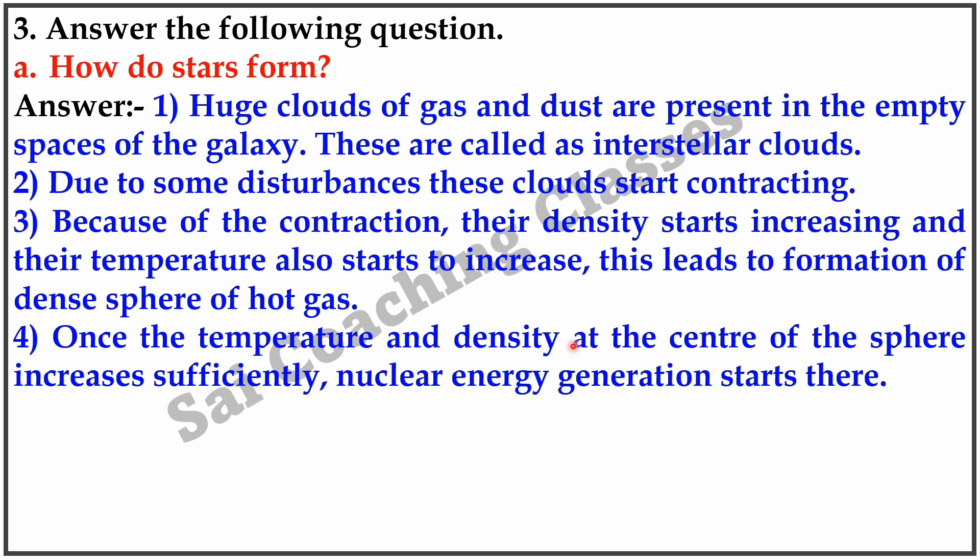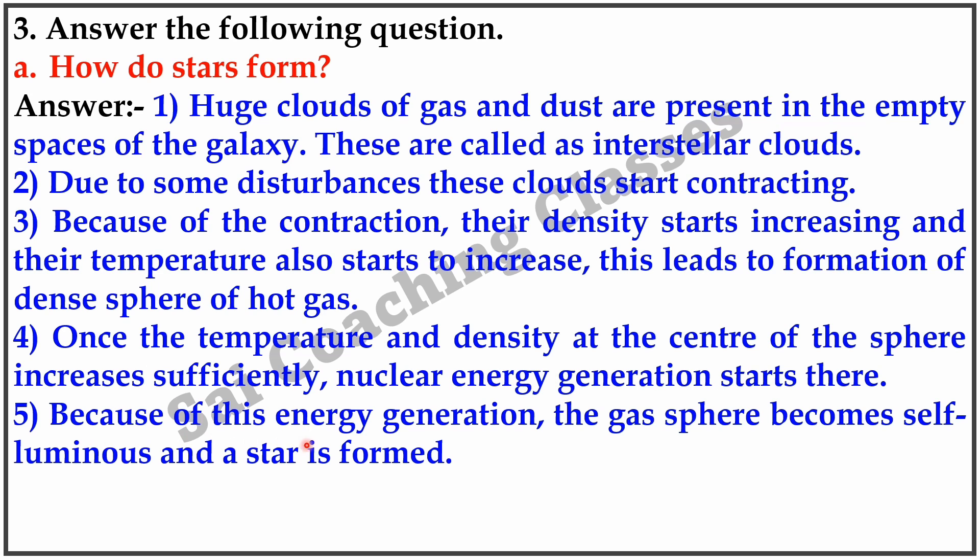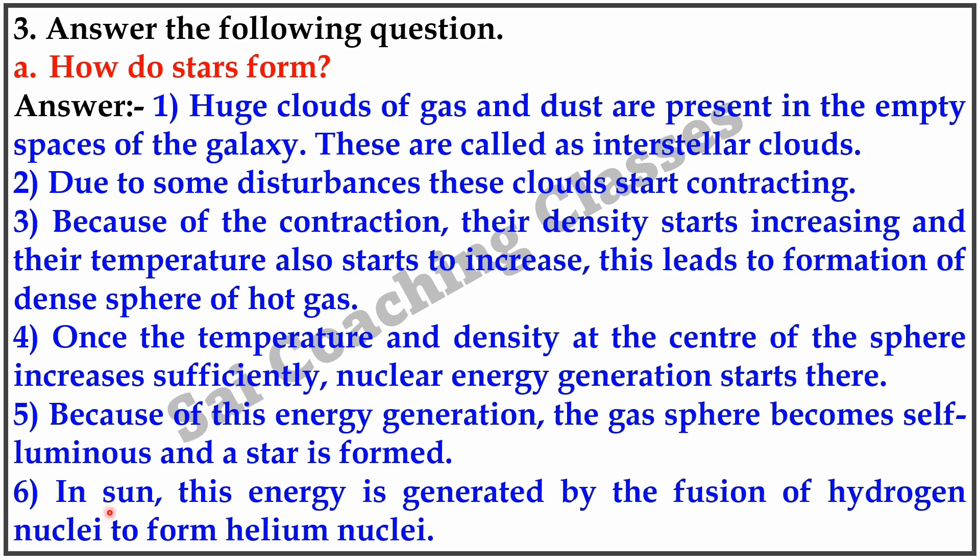Once the temperature and density at the center of the sphere increase sufficiently, nuclear energy generation starts there. Because of this energy generation, the gas sphere becomes self-luminous and a star is formed. In the sun, this energy is generated by the fusion of hydrogen nuclei to form helium nuclei.